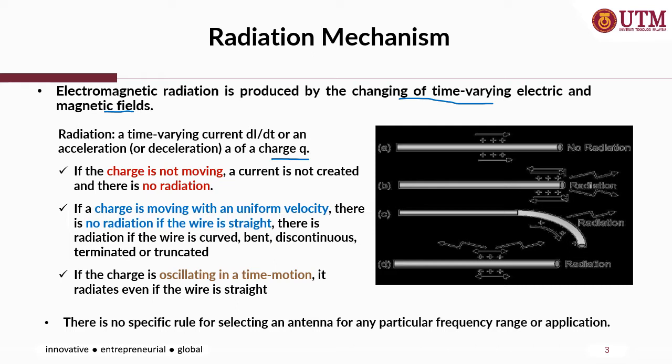If you have a charge and it is static, there is no current or time-varying current produced, therefore no radiation. But if the charge keeps on moving forward and backward repeatedly, there is a time-varying electric and magnetic field produced, therefore electromagnetic radiation or EM wave exists.